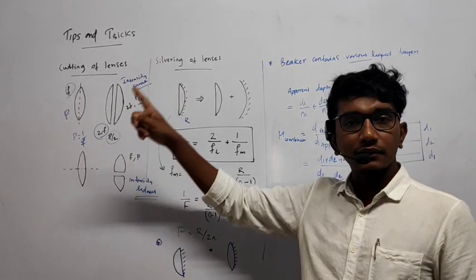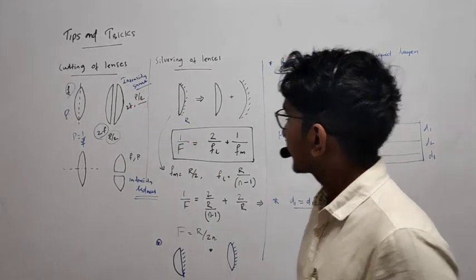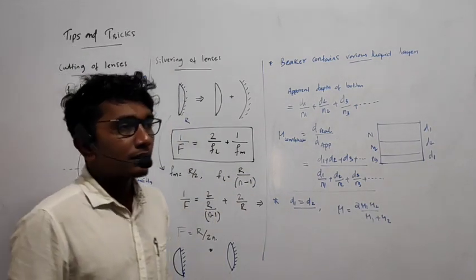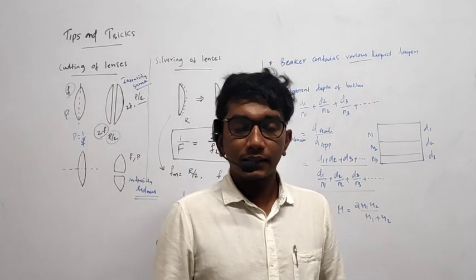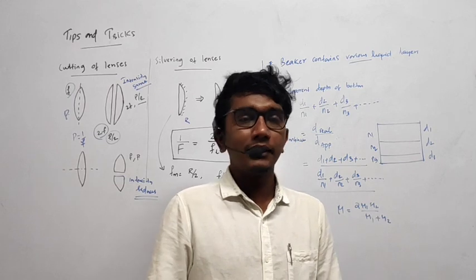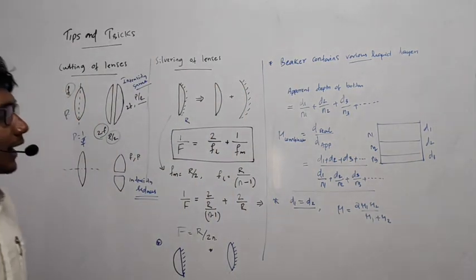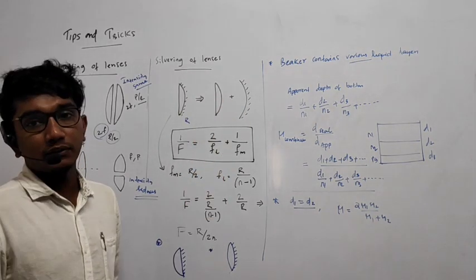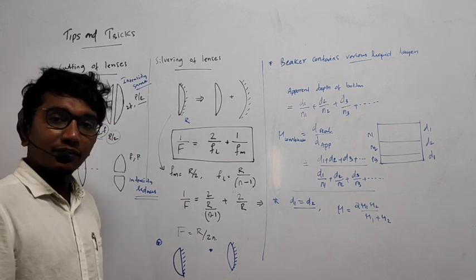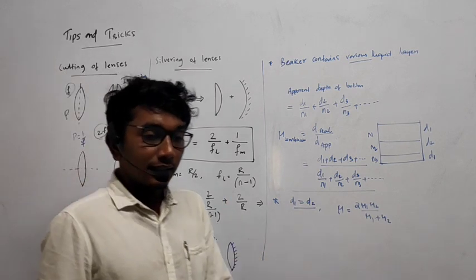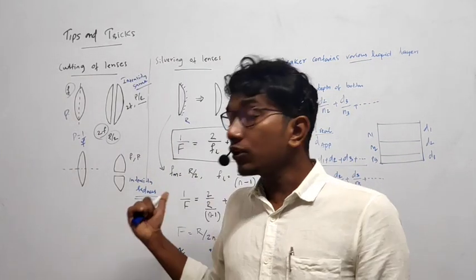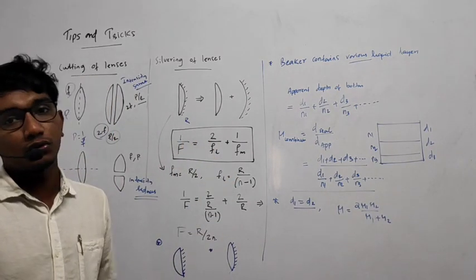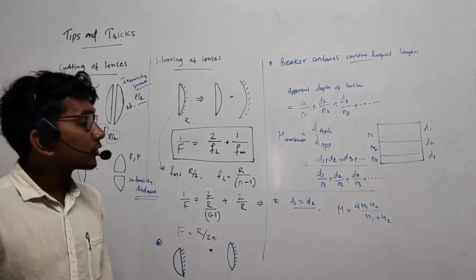So this is what happens when we cut lenses: we've discussed focal length, power, and intensity. Next is silvering of lenses. This is also a pretty good topic. I've given the general formula and worked one example — the remaining two questions are for homework. You can also try with a concave lens; I've only considered a convex lens here.